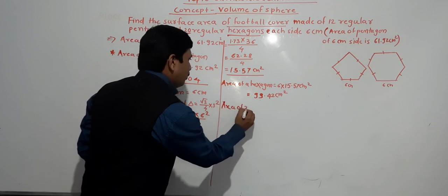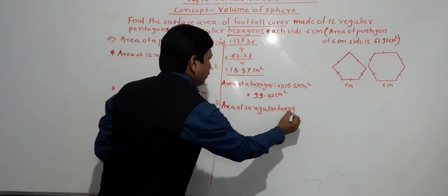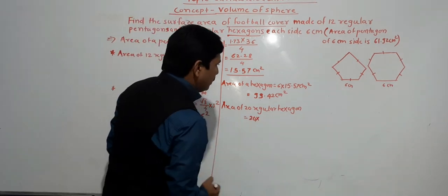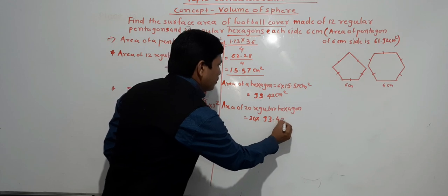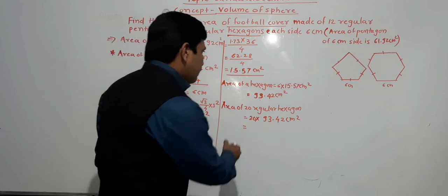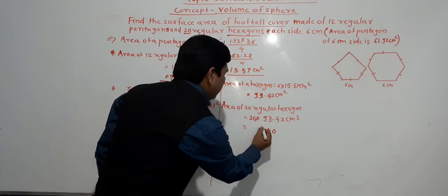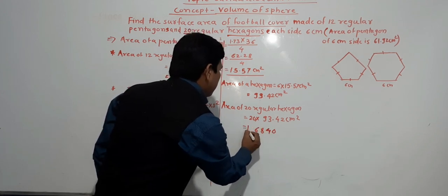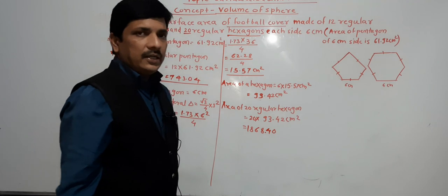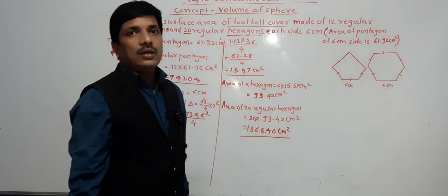Area of 20 regular hexagons equals 20 multiplied by 93.42 cm square. Multiplying: 20 times 93.42 gives 1868.40 cm square. This is the area of 20 regular hexagons.